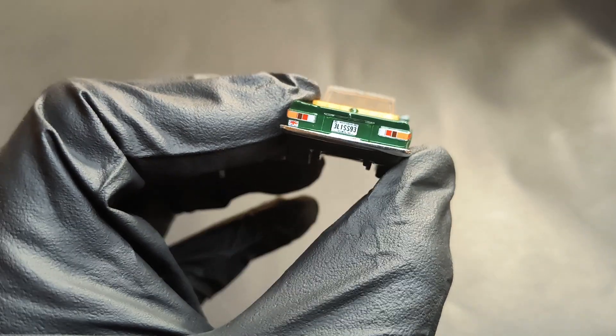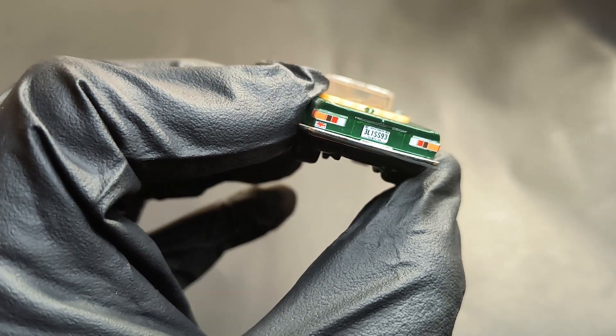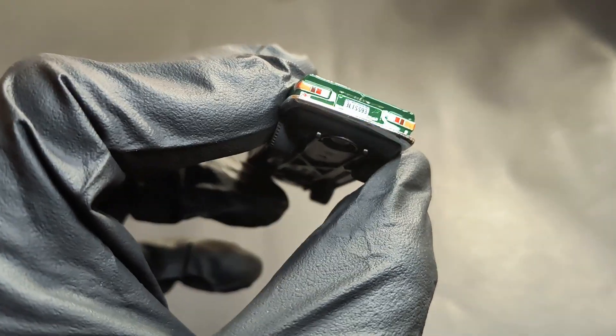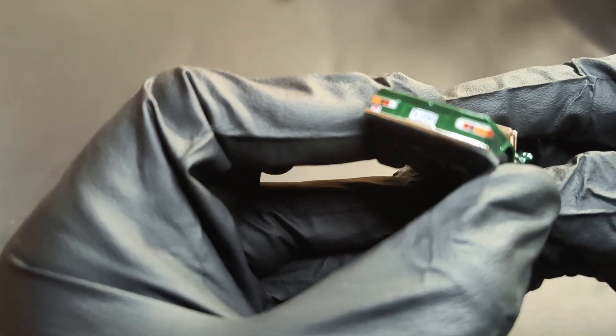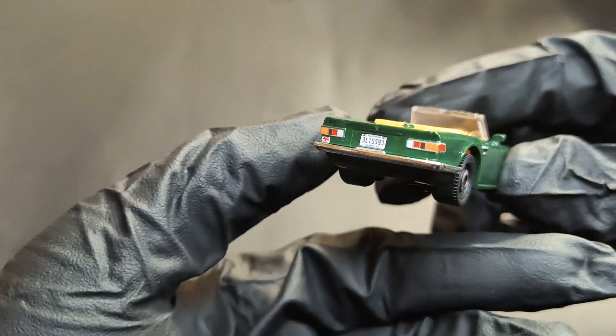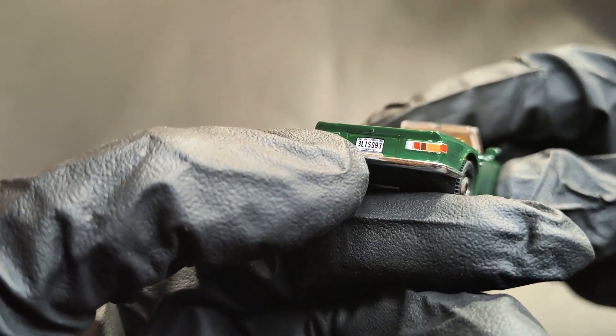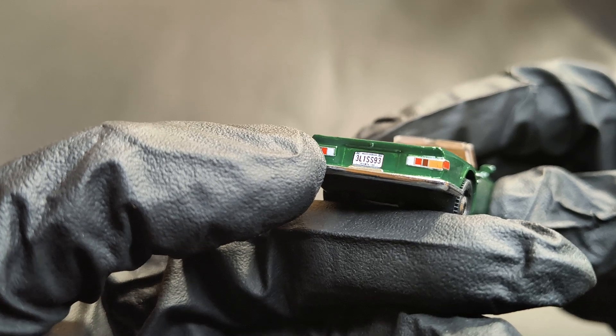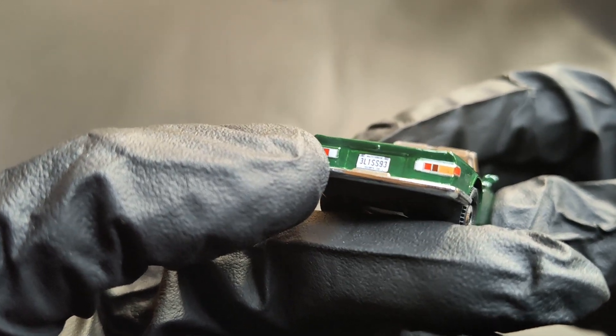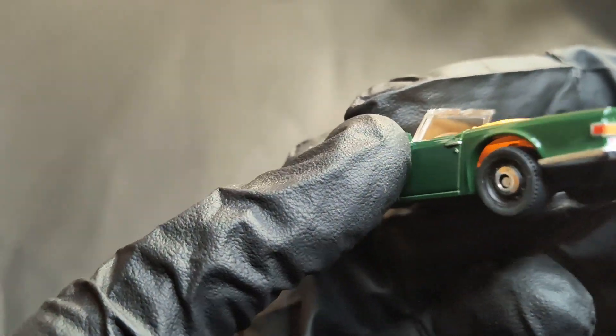You've got the tail lamps, the number plate, and you've also got the British flag on the left side. Even the tail lamps are nicely detailed. You've got the red tail lamp, the amber turn signals, and everything. The number plate reads 3L1SS93. If you know what that means, let me know, because I don't.